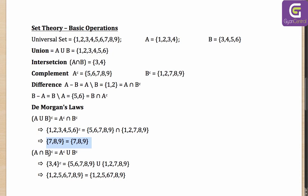For the second De Morgan's law: A intersection B complement — A becomes A complement, B becomes B complement, and intersection becomes union. A intersection B is {3,4}, so its complement is {1,2,5,6,7,8,9}. The other way: A complement {5,6,7,8,9} union B complement {1,2,7,8,9} gives {1,2,5,6,7,8,9} — the same set, validating De Morgan's laws.